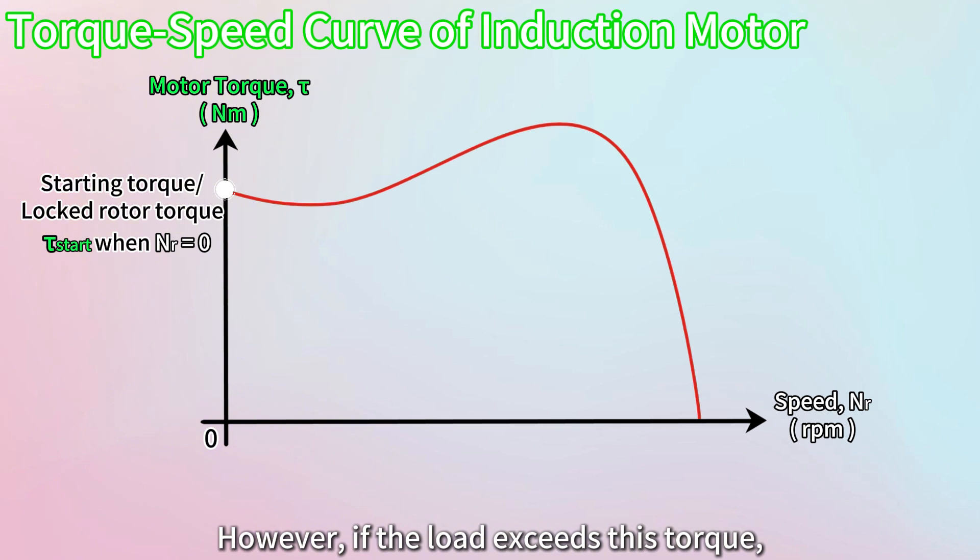However, if the load exceeds this torque, the motor will fail to start. Next, as the motor accelerates, there is a temporary dip in the available torque, and the lowest point during this acceleration phase is known as the pull-up torque.